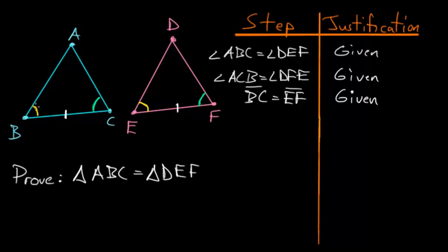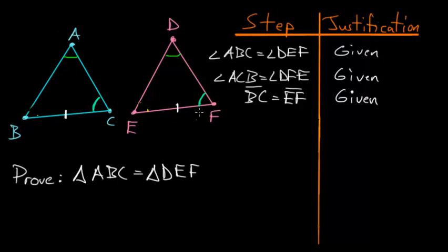This proof really needs to be looked at in two parts. The first part considers two triangles ABC and DEF where two pairs of angles are equal and the bases of the triangles are equal — this is essentially the Angle-Side-Angle theorem. The second part considers two equal angles where the second equal angle is opposite the base, which is the Angle-Angle-Side theorem, and we'll focus on that in the next video.